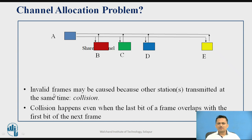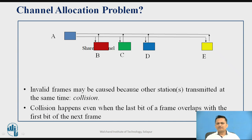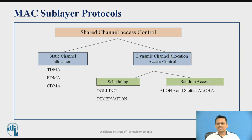The channel allocation problem arises when a single channel is shared by multiple nodes in the network — who will get access to the channel? If more than one node is transmitting data simultaneously and this is not managed, collision may result. The frames will get garbled, invalid frames will be produced, and they must be discarded. Even if a single bit overlaps, collision will occur.